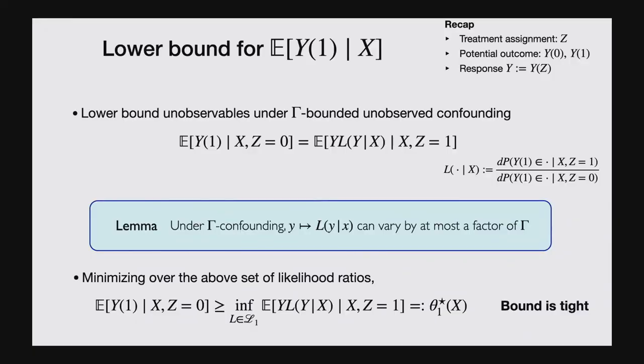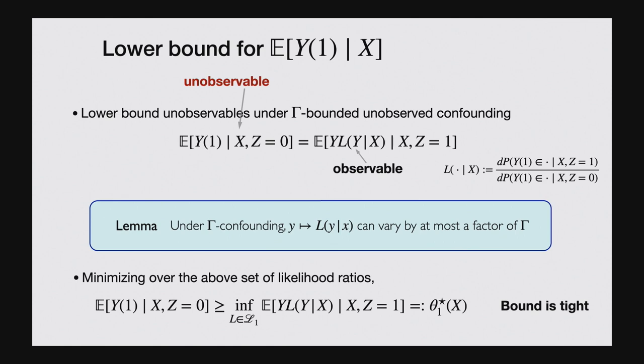I'm going to focus on deriving a worst-case bound on the conditional mean of Y1 given X, because the Y0 case is symmetric — doing a personalized sensitivity analysis. This has two components: the treated people, for whom I observe Y1 and can estimate from data; and the control people, for whom I never observe Y1 — I always have zero data for this. Before, when I assumed no unobserved confounding, I could turn the Z equals 0 component into Z equals 1. Now, I want to be honest, so I can no longer do this.